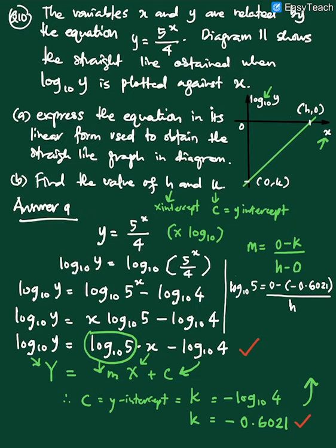So log base 10 5 equal 0 minus 0.6021 over H. H minus 0 is H. And then H equal, this is a positive 0.6021 divide log base 10, we have 0.6989. So our H are equal with 0.8614. Okay, and this is our K, negative 0.6021. So I got the answer.